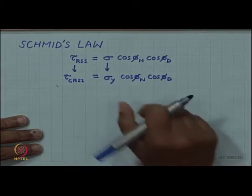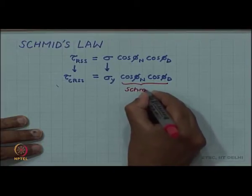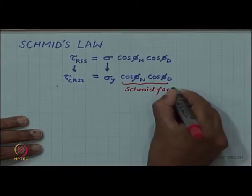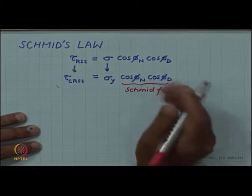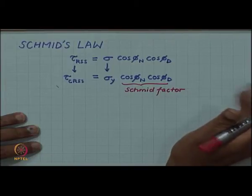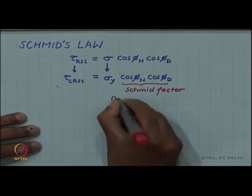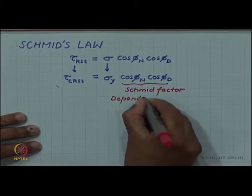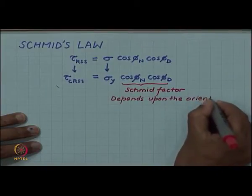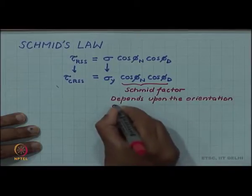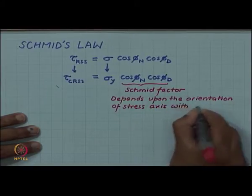Now, if we look at this relationship, this particular factor which we call the Schmid factor depends upon φ_n and φ_d. Note: φ_n is the angle between the stress axis and the slip plane normal, and φ_d is the angle between the stress axis and the slip direction. So this factor depends on the orientation of the stress axis with respect to the slip system.